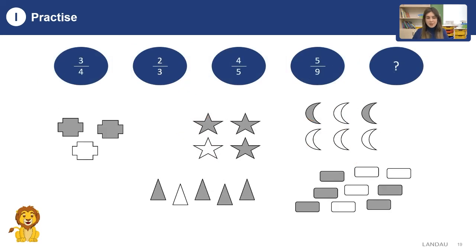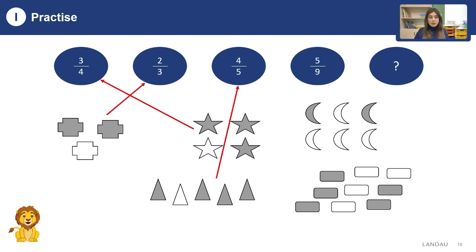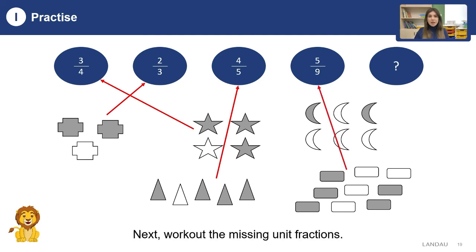Let's practice for the last time. Can you please find the fractions? Don't forget, they are about shaded parts — you need to match each symbol with each shape. Now we can check our answers. The first part is two-thirds, because out of three, just two parts are shaded. The next part is three-fourths, because out of four, just three parts are shaded. The next one is two-sixths, because out of six parts, two moons are shaded. The next one is four-fifths, as four parts are shaded. And the last one is five-ninths, because out of nine, just five parts are shaded.